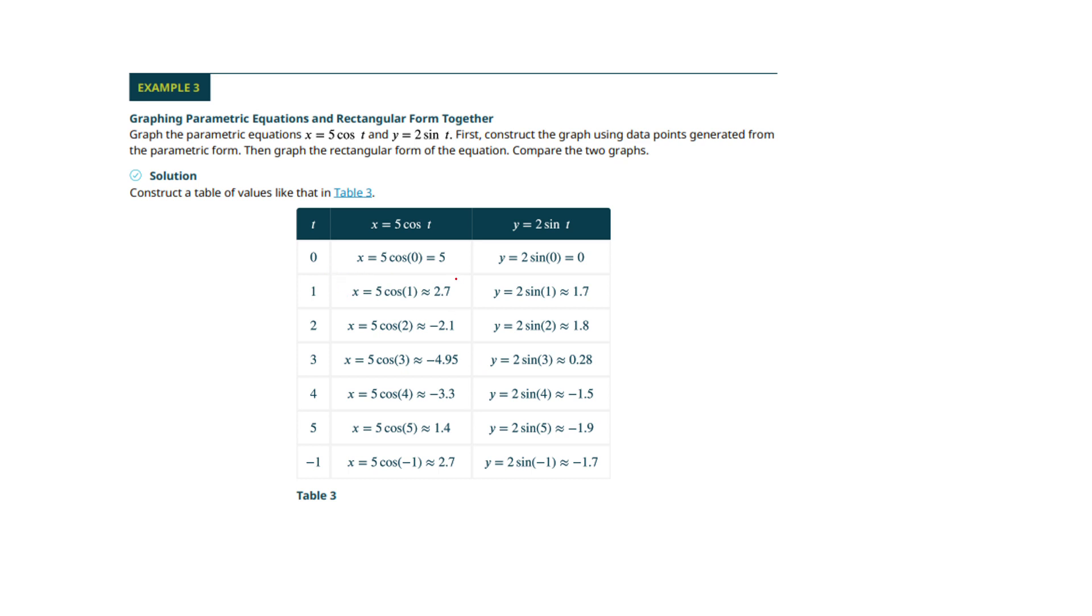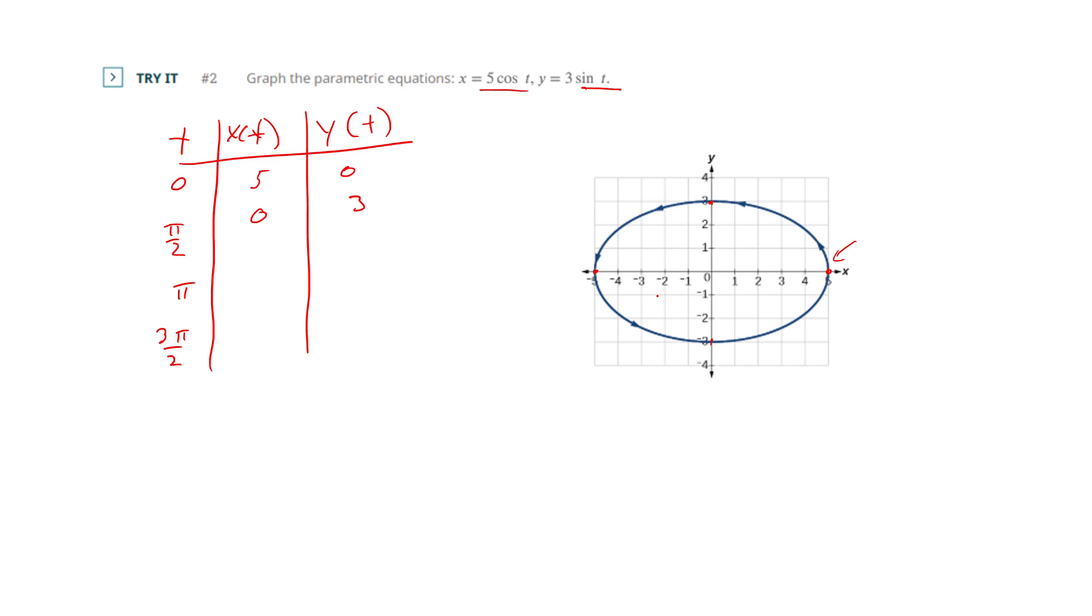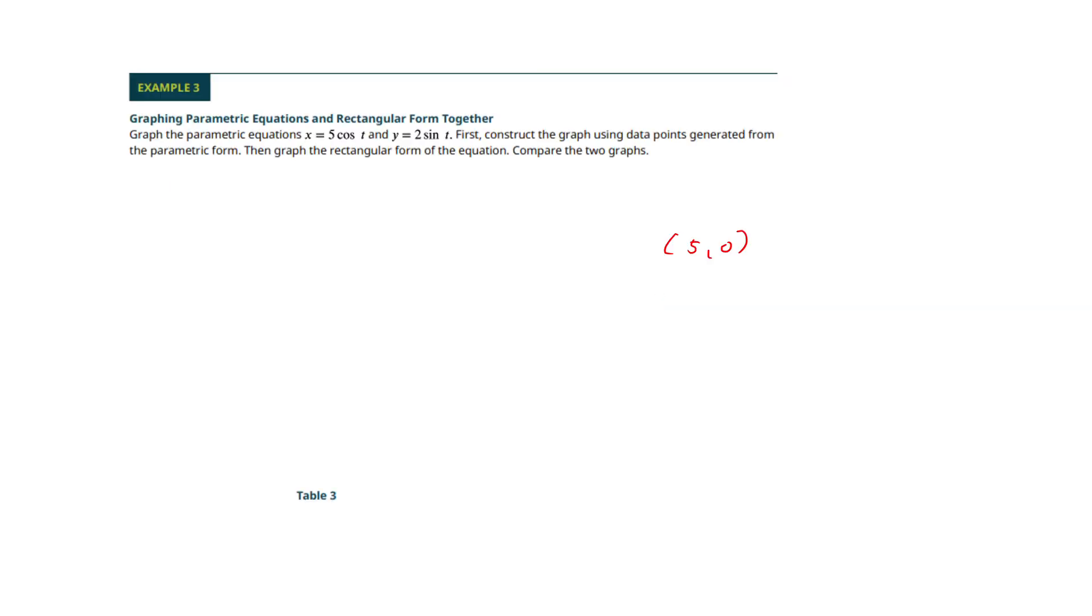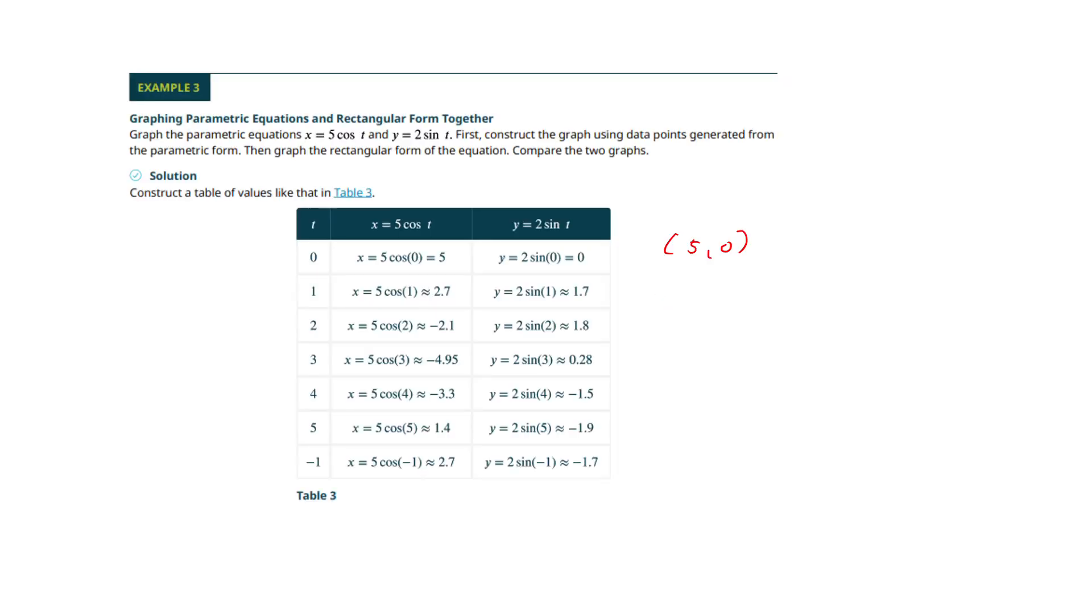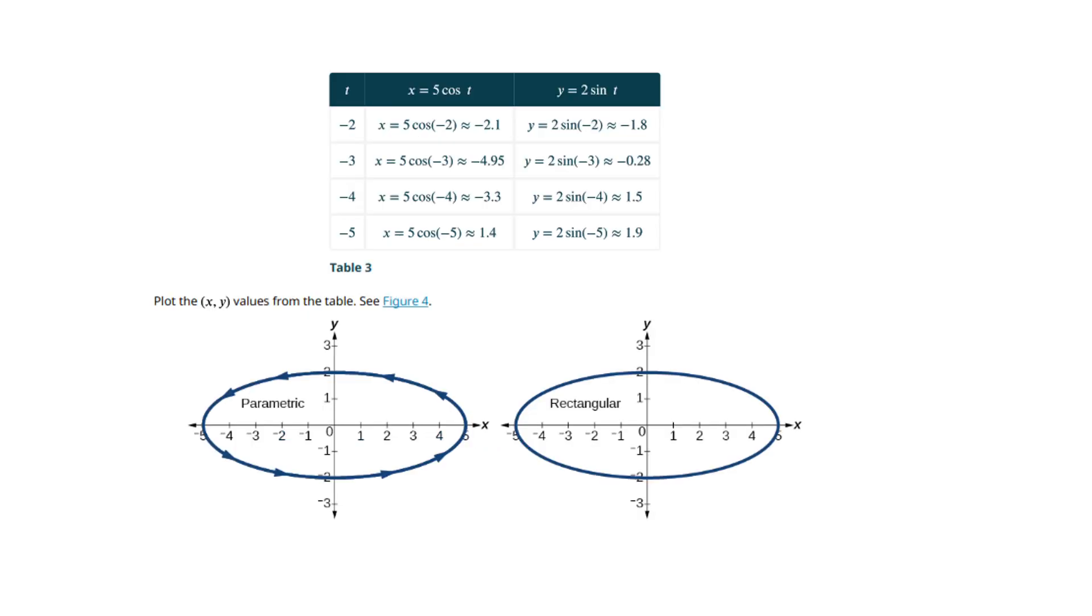They're just picking values for t, just like before, points 5, 0. Is this the same equation? No, not quite, but pretty much. Okay. Pretty much the same equation. So, okay.